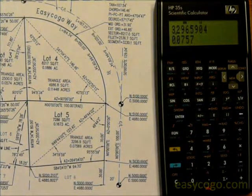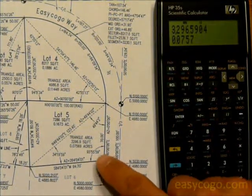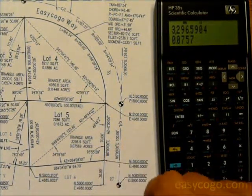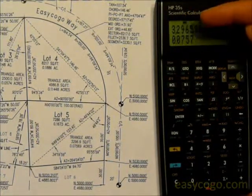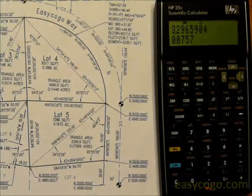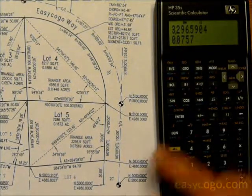And then it follows with the area of the triangle. And it showed in the prompt, square feet and acres. So the top line is the square feet, bottom line is the acres.